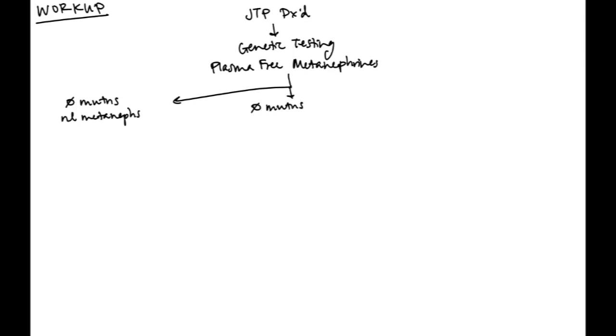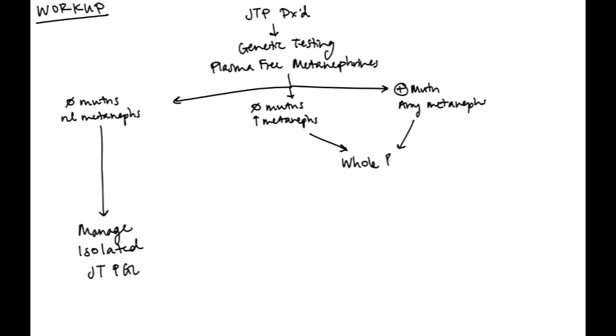For the workup of these tumors, my mentor and I recently did a deep dive into paraganglioma literature for a book chapter that we wrote and developed this algorithm for working up any jugulotympanic paraganglioma that's been diagnosed. Start with genetic testing and plasma-free metanephrines. No longer do we need to do any of the 24-hour urine metanephrine testing. Plasma-free metanephrines are preferred. This can result in three buckets of outcomes: no mutations and normal metanephrines, no mutations and increased plasma metanephrines, and a positive mutation with any metanephrines result. If there are no mutations and normal metanephrines, you can assume that this is an isolated jugulotympanic paraganglioma and manage it accordingly.